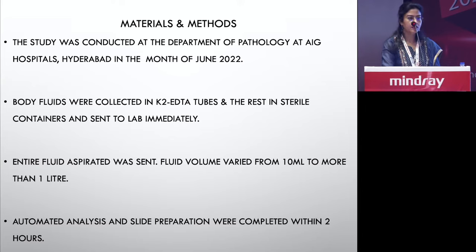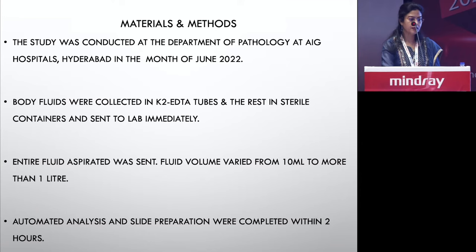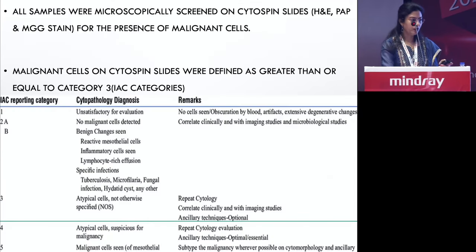We strongly recommend clinicians to send all the aspirated fluid, whether 10 ml or 1 litre, so we receive volumes ranging from 10 ml to 1–1.5 litres. Automated analysis and slide preparation were done within two hours of receipt. During this one month period, we analyzed 147 serous fluids comprising ascitic and pleural fluids on the Mindray BC 6200 body fluid mode. All samples were also microscopically screened on cytospin slides with H&E, MGG, and PAP.